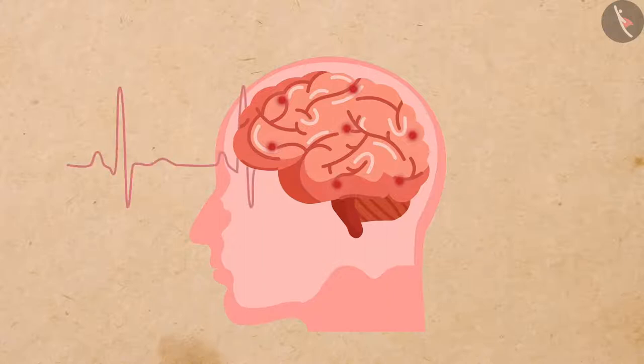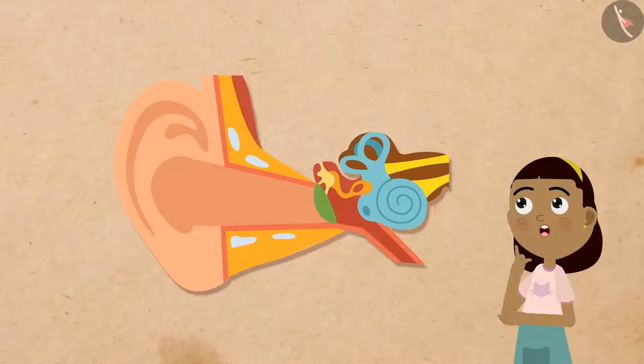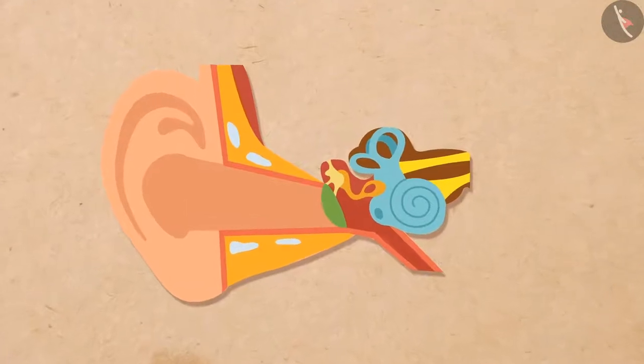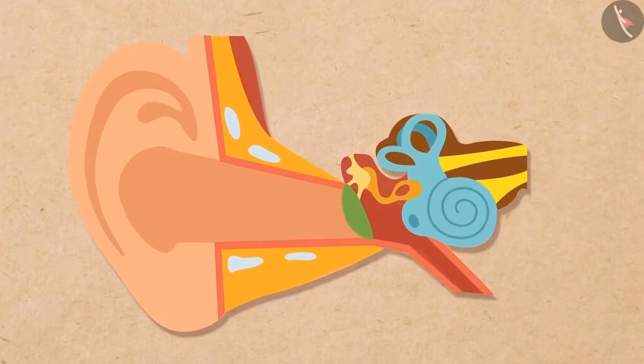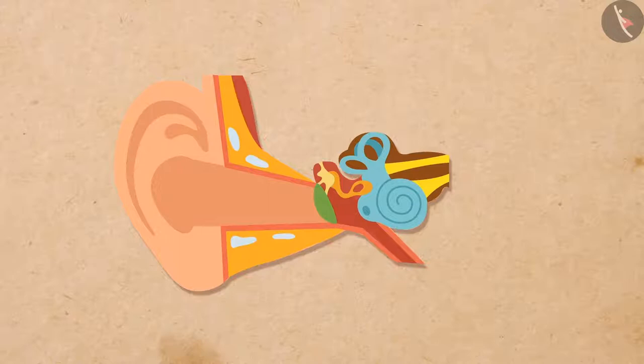Now let us learn about the auditory parts of the human ear and understand how it functions. Look at this picture of the human ear. As you can see in this picture, the human ear is mainly divided into three parts.